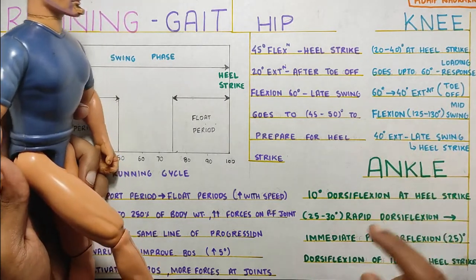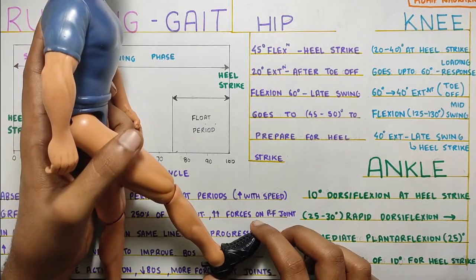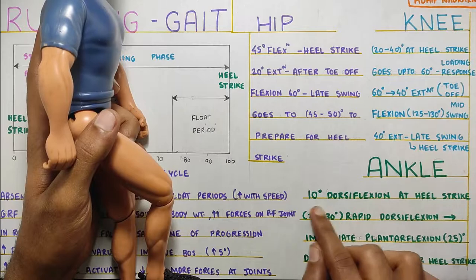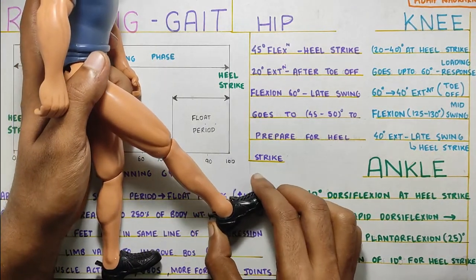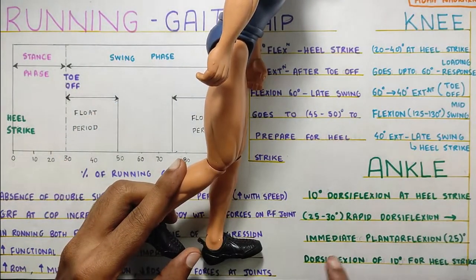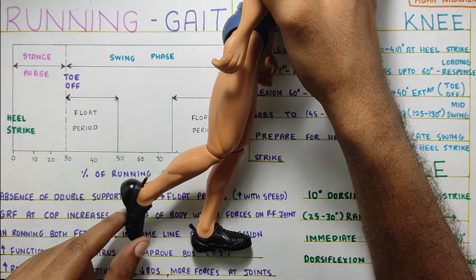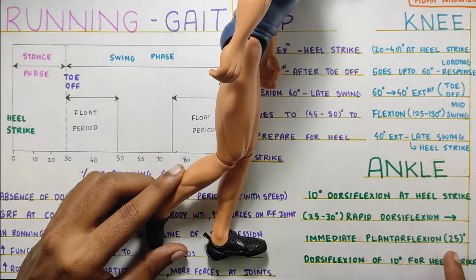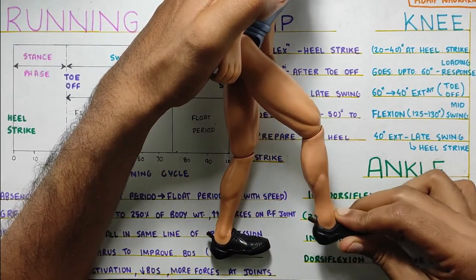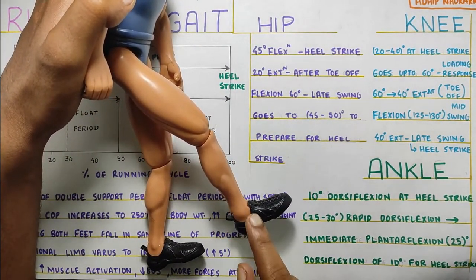At the ankle, it starts with 10 degrees of dorsiflexion during heel strike. This progresses to rapid dorsiflexion of 25 to 30 degrees. It then goes to immediate plantar flexion of around 25 degrees — that is when you are pushing off the ground at toe off. This is followed by the swing phase, after which the ankle again returns to 10 degrees of dorsiflexion to prepare for the next heel strike.